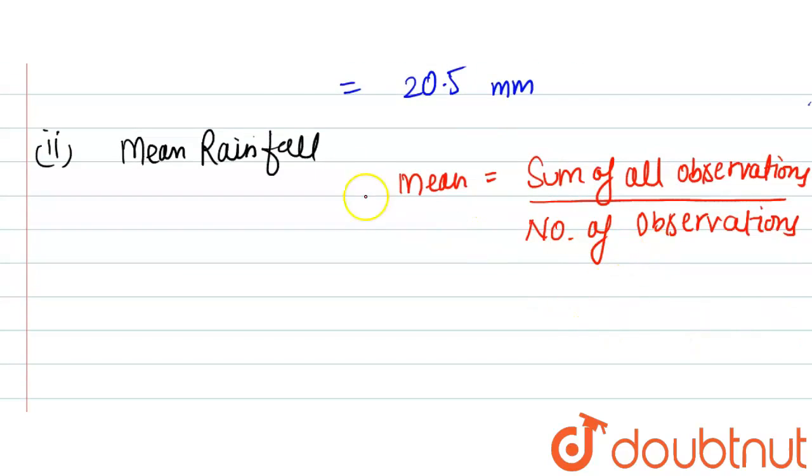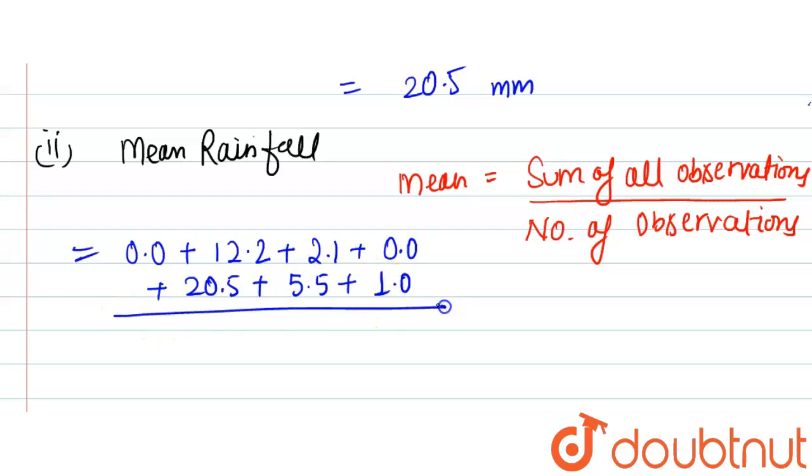If we proceed with the formula, mean rainfall will be equal to sum of all observations. So the sum will be 0.0 on Monday, 12.2 on Tuesday, 2.1 on Wednesday, 0.0 on Thursday, 20.5 on Friday, 5.5 on Saturday, and 1.0 on Sunday. It is divided by number of observations, so there are seven days, divided by 7.